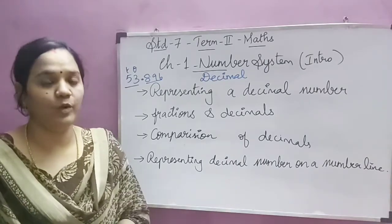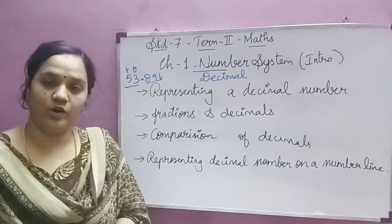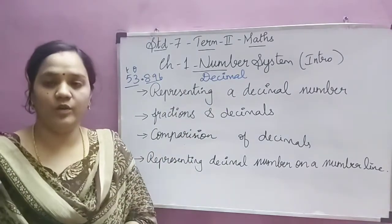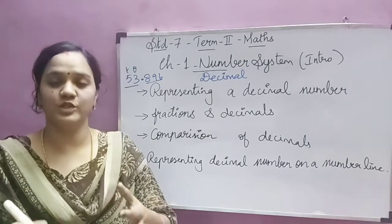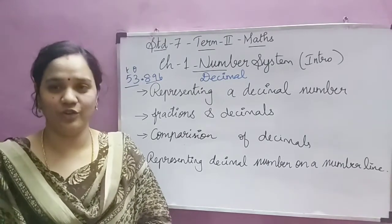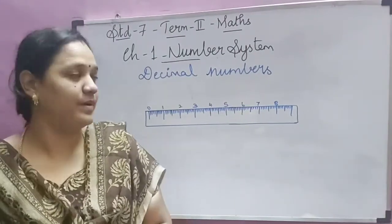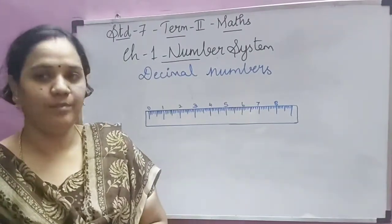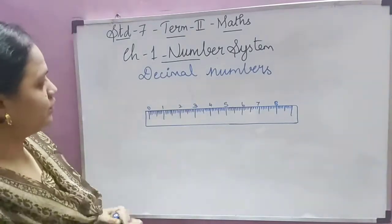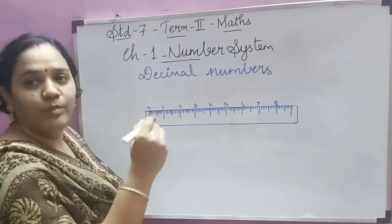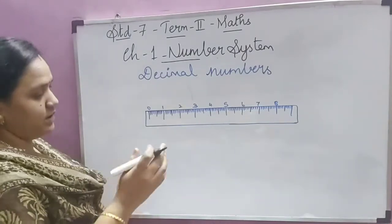In this video I am going to explain representing a decimal number, and in my next video I am going to explain exercise 1.1, so please do watch that video also. A decimal number is a number which has a point in it, followed by some numbers which are less than 1.